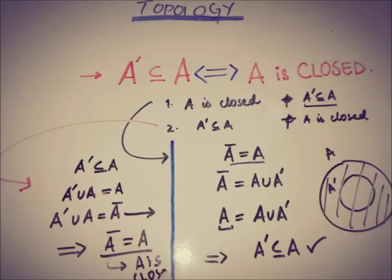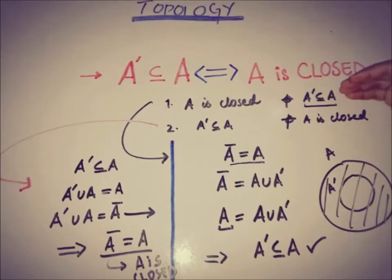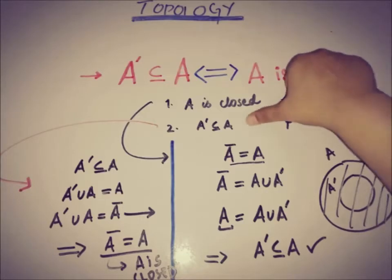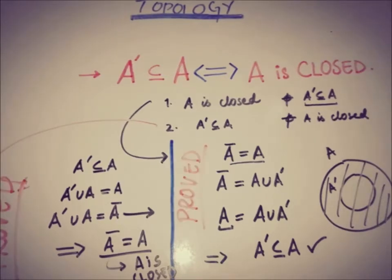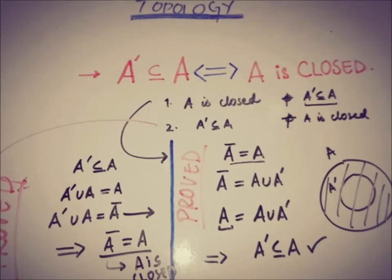So we have proved both directions: if A is a closed set, then A' ⊆ A; and if A' ⊆ A, then A is a closed set. This is a simple but really useful property relating the closure and accumulation points of a set. That's all for now — look out for more such videos, and you can subscribe to the channel to watch upcoming videos. We'll meet in the next video — till then, take care, goodbye.